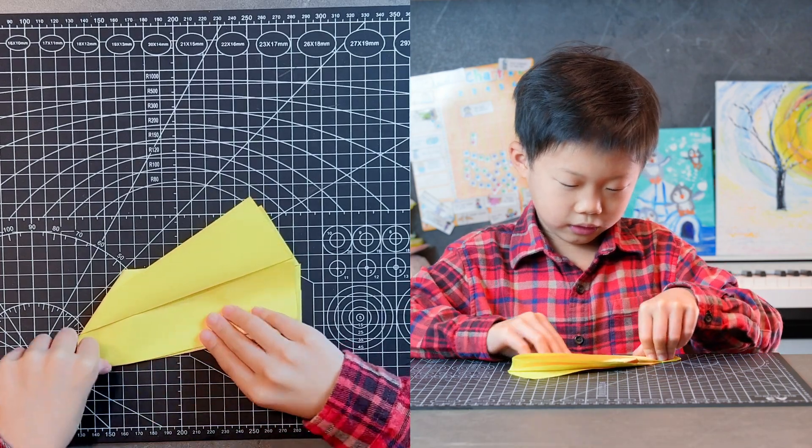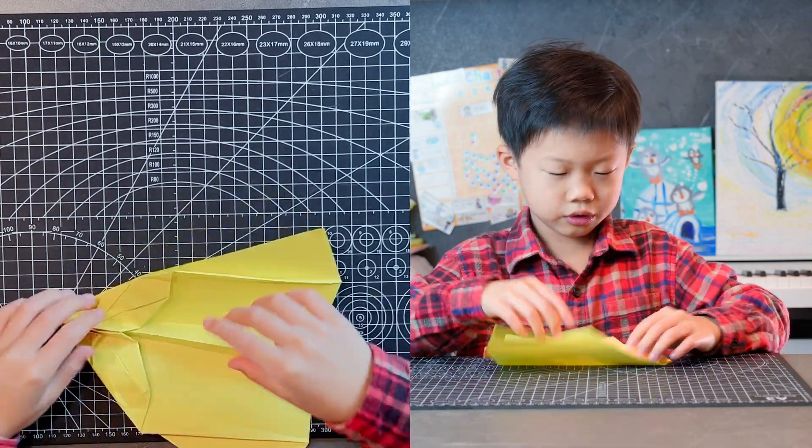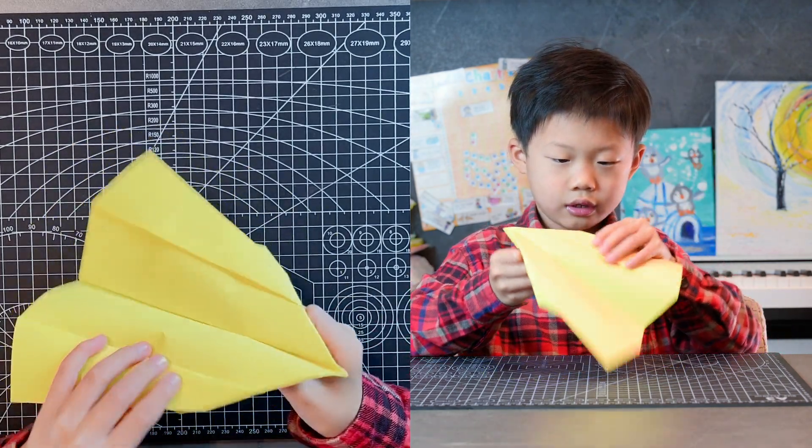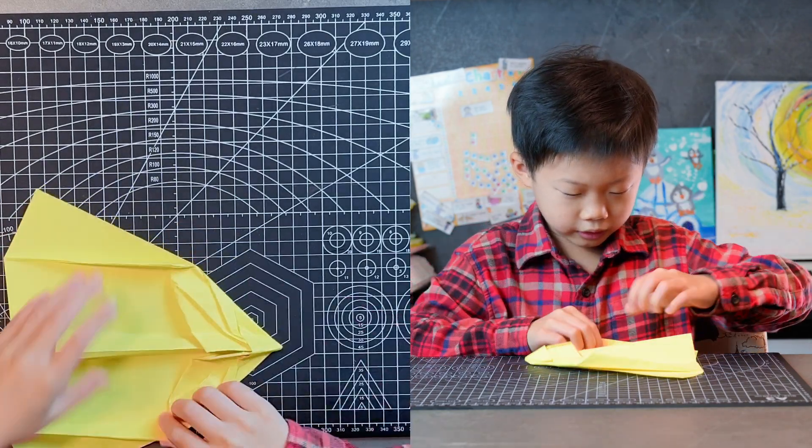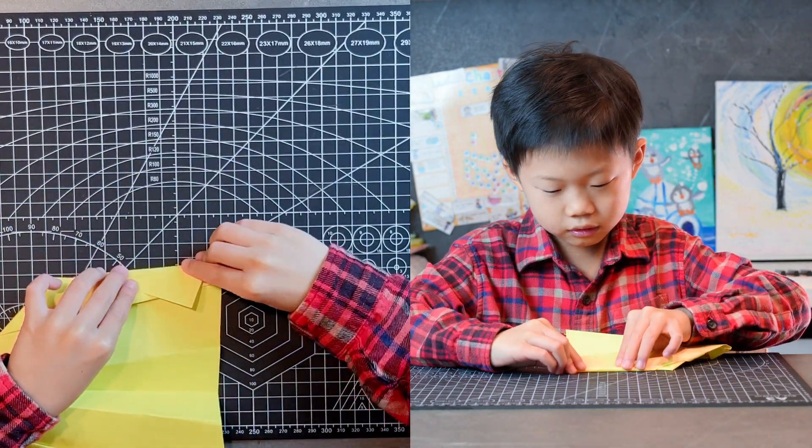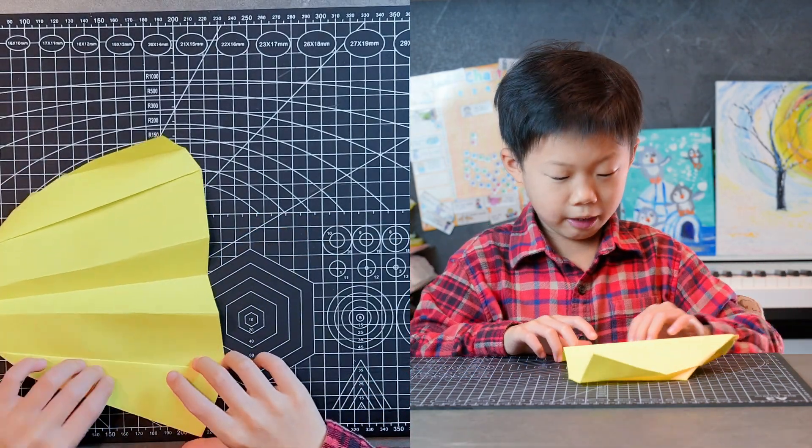Now, you can fold the other side to match. And then, you can just reshape these bending gears. Fold some fins like this. Remember, fins are parallel.